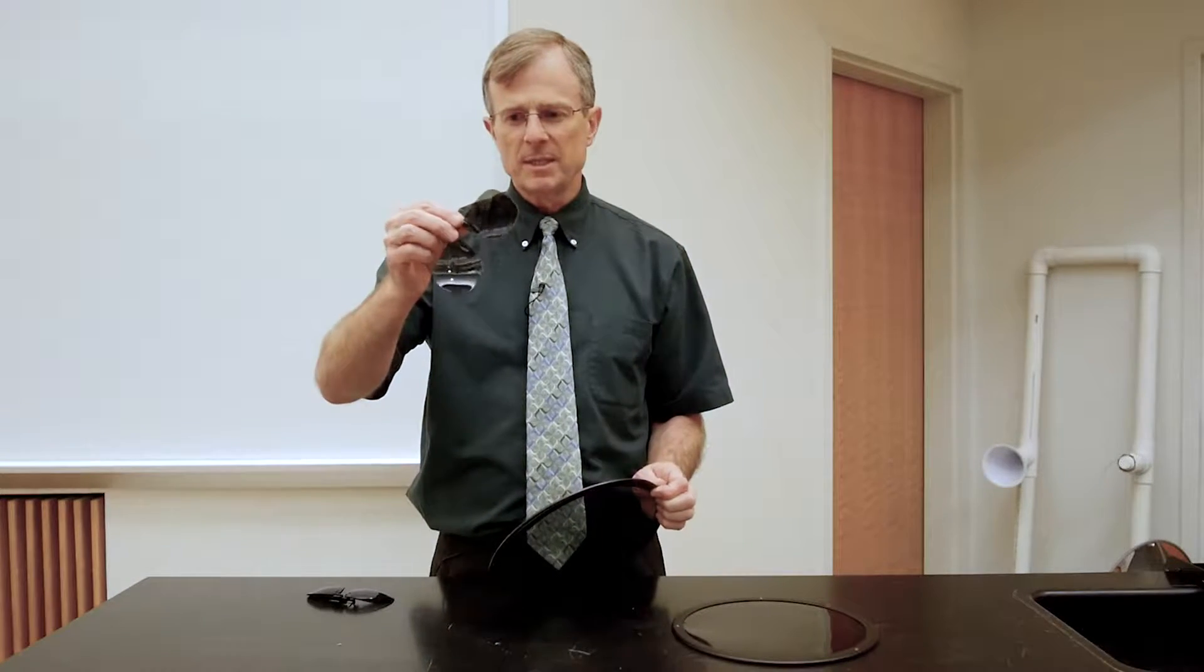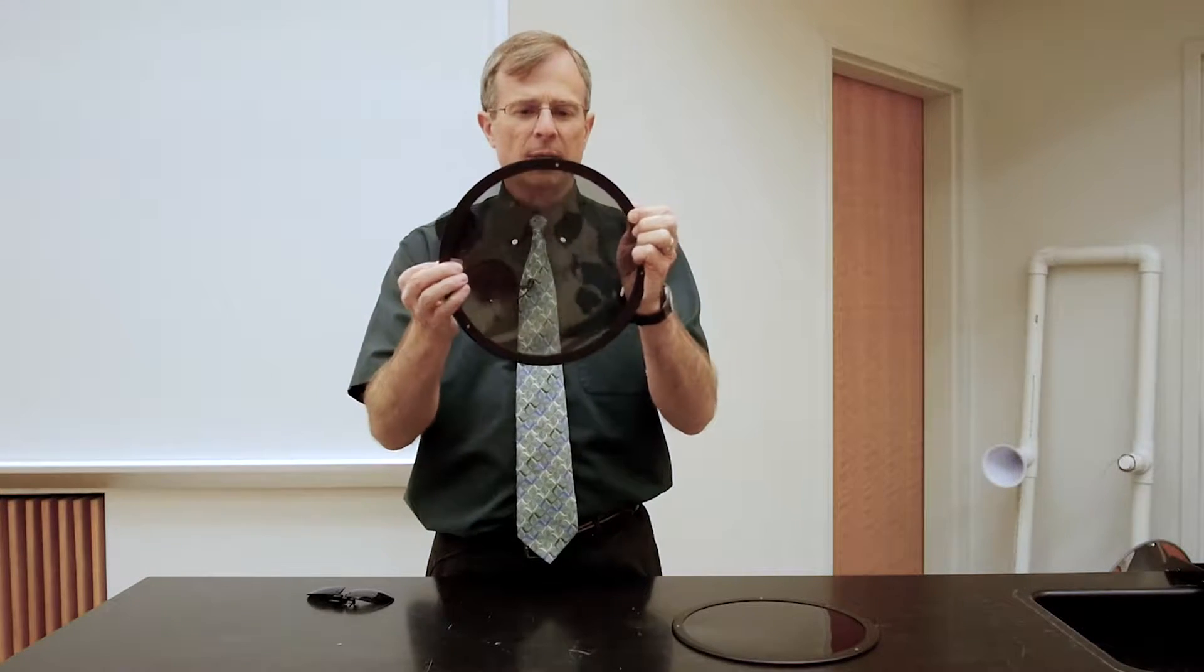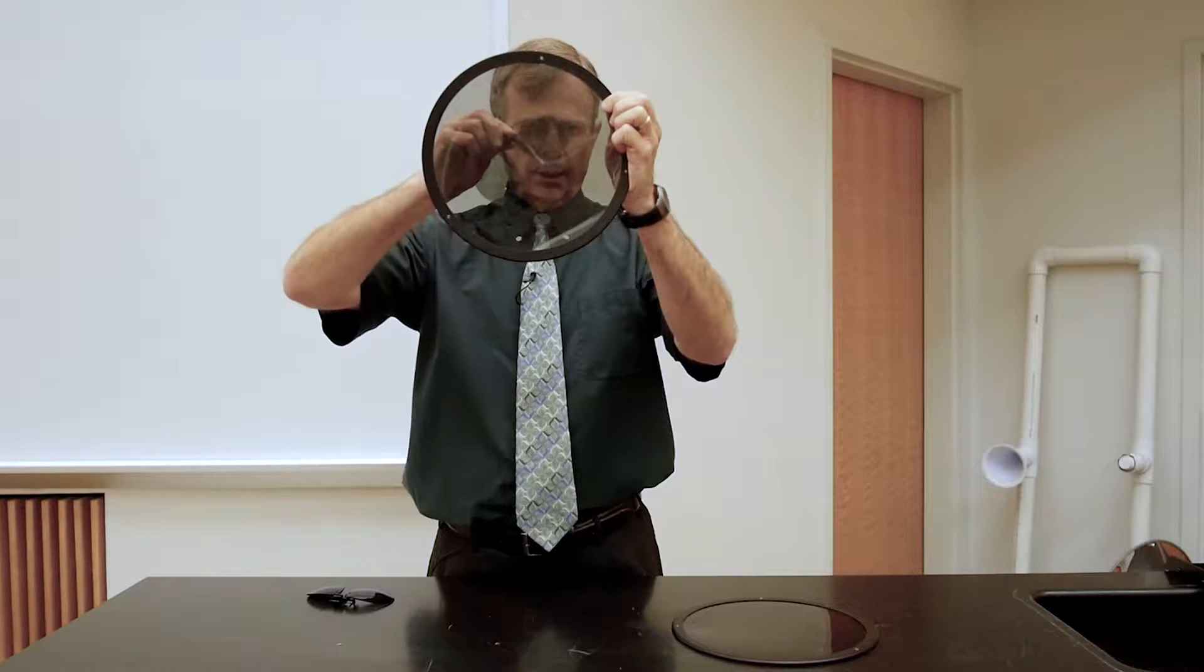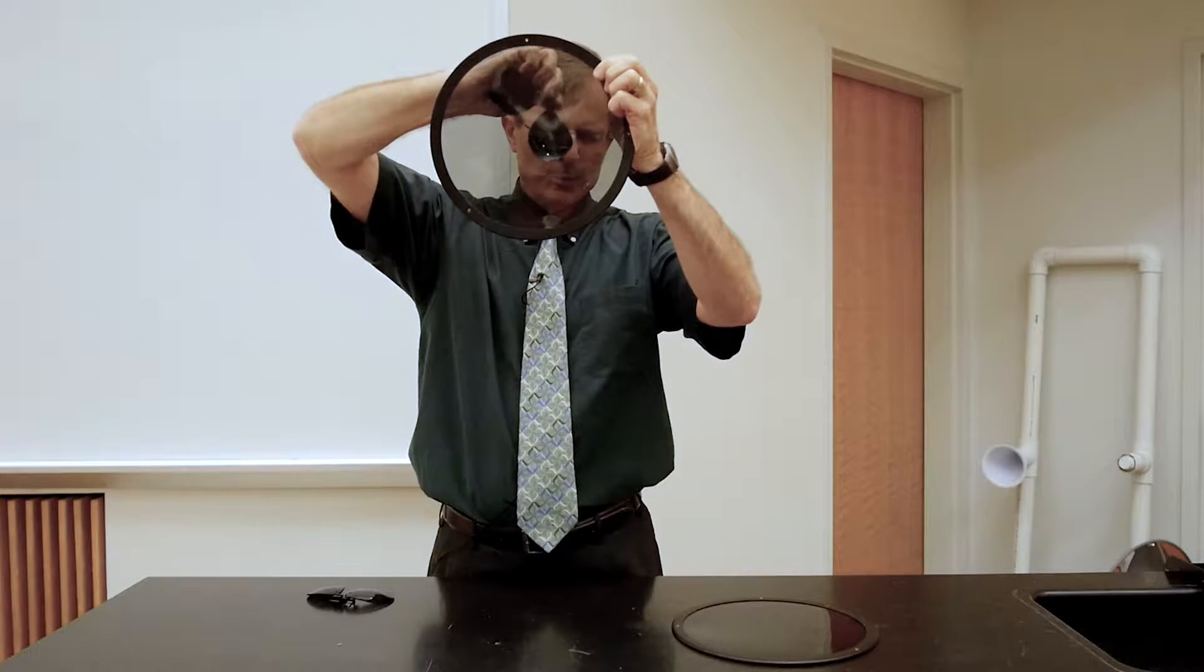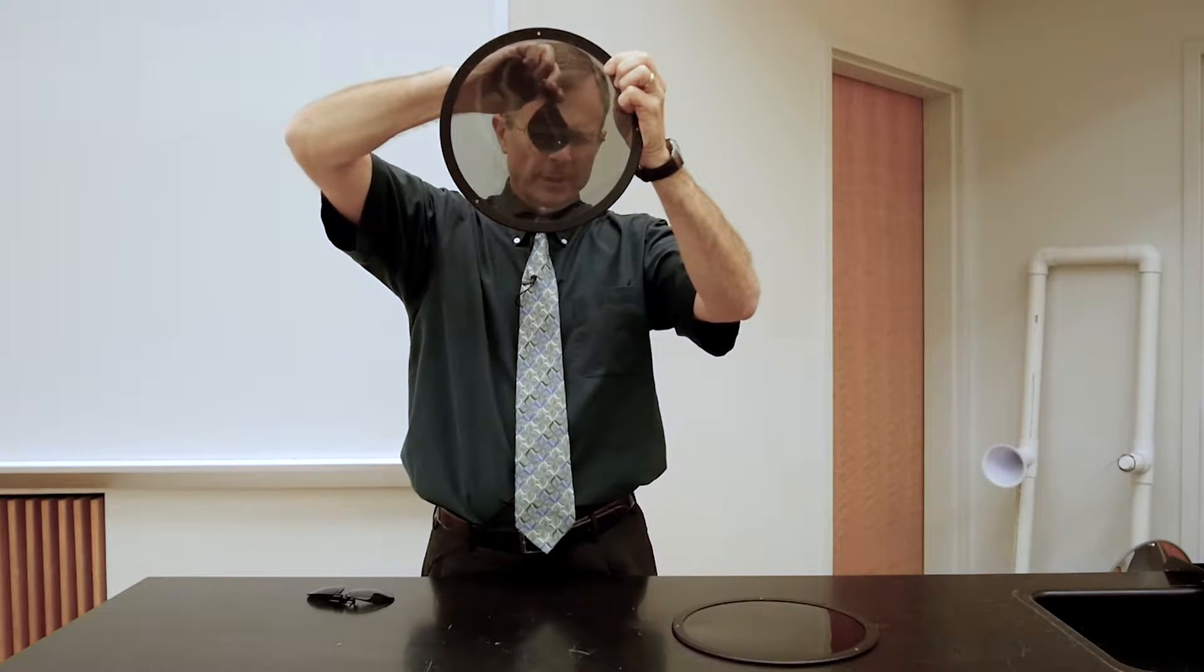We can do the same thing by just taking these and putting it in front of this other and then rotating. And I think you can see that at this point the image goes completely dark through that lens.